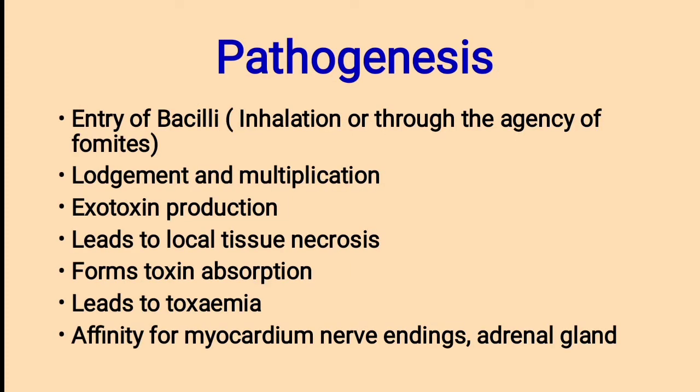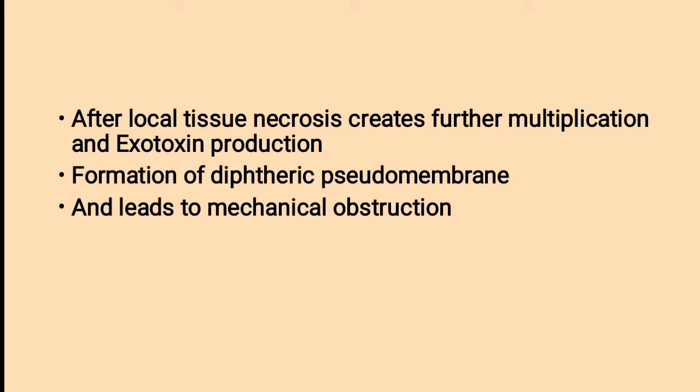Pathogenesis or disease-causing ability of Corynebacterium diphtheriae. Entry of bacilli through inhalation, then bacteria lodgement and multiplication, forming endo-exotoxin leads to local tissue necrosis. Toxin absorption leads to toxemia, with affinity for myocardium, nerve endings, and adrenal glands. Further multiplication and exotoxin production form a diphtheria pseudomembrane, leading to mechanical obstruction.